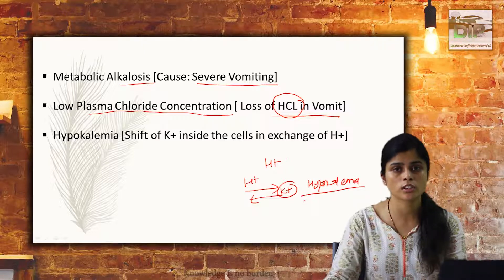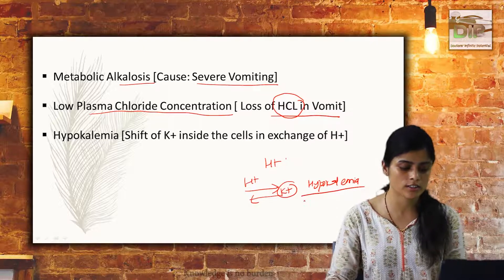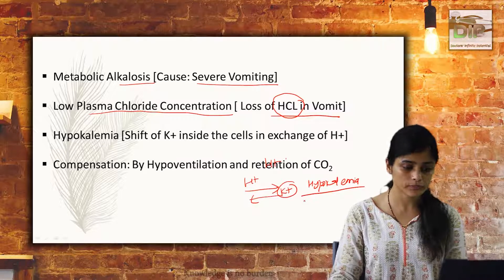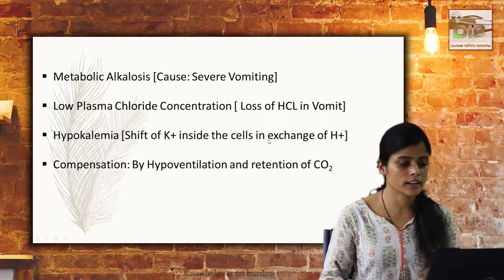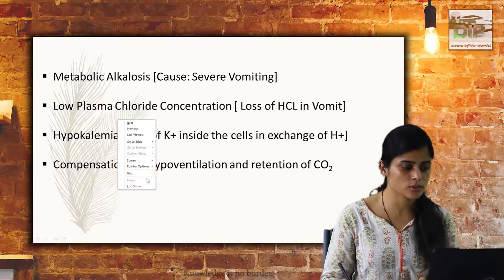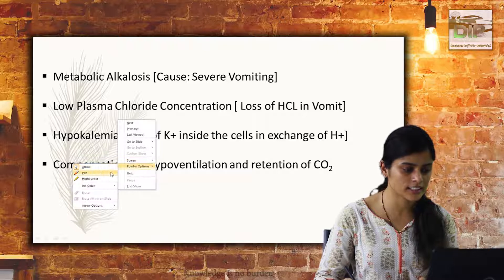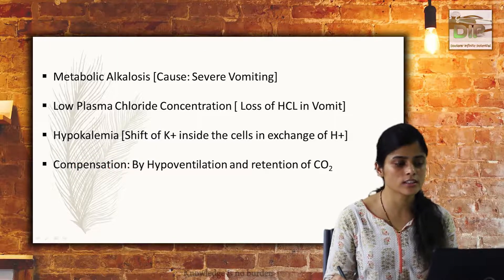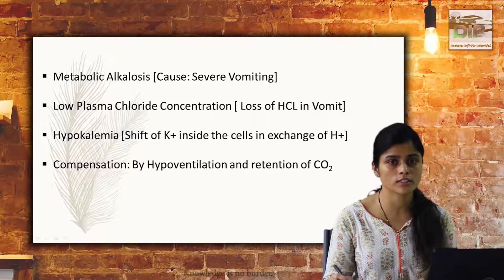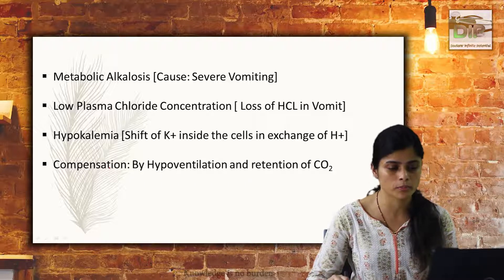Alkalosis is always associated with hypokalemia and vice versa in case of acidosis. The compensation here is by hypoventilation — that is, by retention of PCO2 — and as we saw, the PCO2 level is at the increasing trend. This is the cause of metabolic alkalosis, where compensation is done by the respiratory system but not fully compensated.